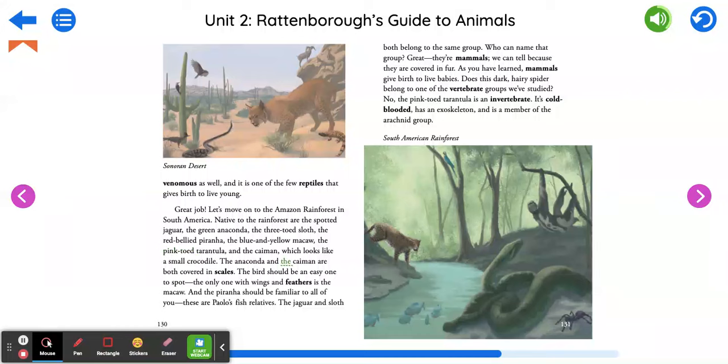The anaconda and the caiman are both covered in scales. The bird should be an easy one to spot. The only one with wings and feathers is the macaw. And the piranha should be familiar to all of you. These are Paolo's fish relatives. The jaguar and sloth both belong to the same group. Who can name that group? Great! They're mammals.